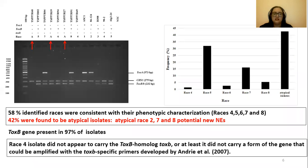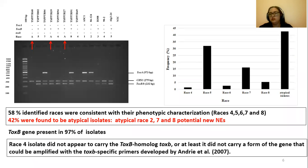The PCR analysis revealed that 58% of the identified races were consistent with their phenotypic characterization as races 4, 5, 6, 7, and 8. Interestingly, 42% were found to be atypical. These atypical isolates were able to cause necrosis on the differential line Glenlea, but lacked the expected ToxA gene. Hence, they may have new necrotrophic effectors.